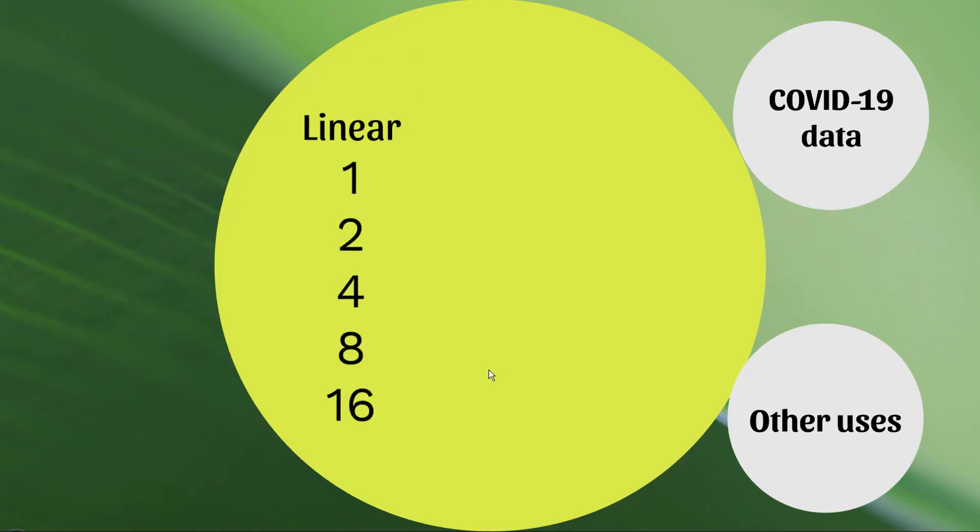Alright, Justin, enough foreplay. Let's get into it. What do logs mean? Well, here's a similar linear scale, but I'm just omitting quite a few of the values. So here's one, two, four, eight, and 16.